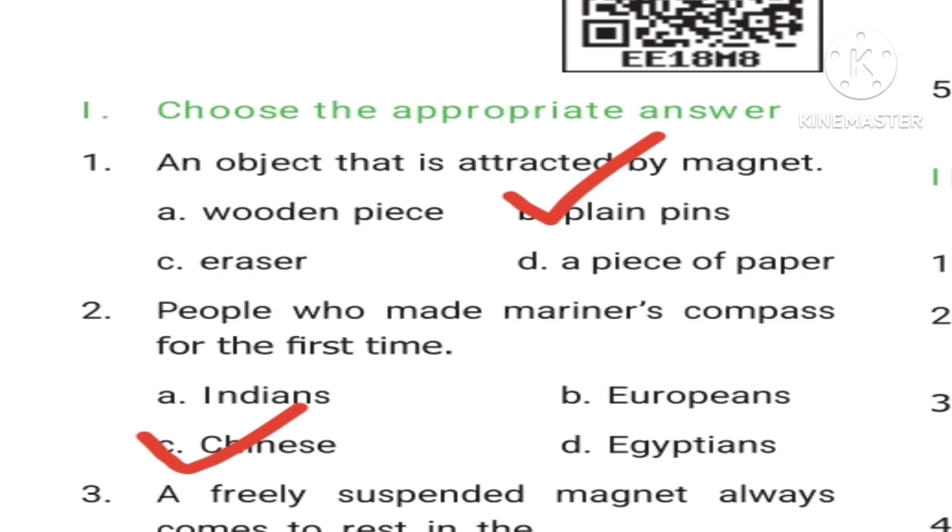First question: An object that is attracted by magnet - Option A: wooden piece, B: plain pins, C: eraser, D: a piece of paper. Answer is B, plain pins. Second question: People who made mariner's compass for the first time - Option A: Indians, B: Europeans, C: Chinese, D: Egyptians. Answer is C, Chinese.